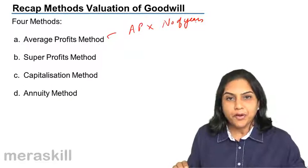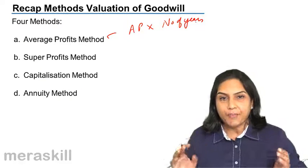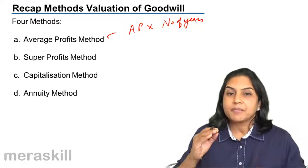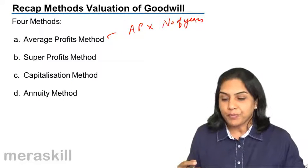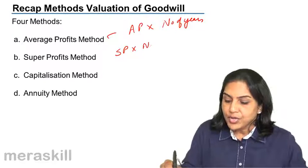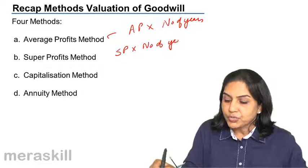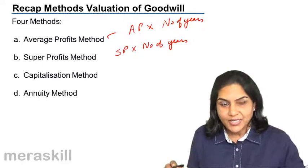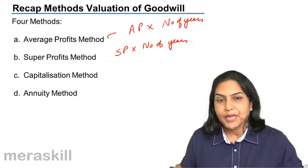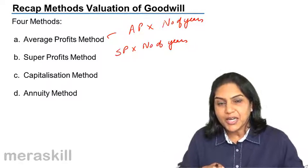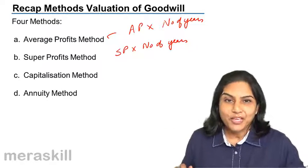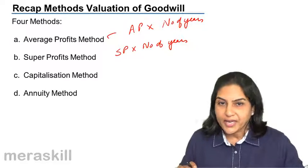Then we said super profits method. Every business is expected to make profit. Super profits method is the actual value of goodwill where a business makes extra profits, or super profits. So, instead of average profits, we took super profits multiplied by number of years. Super profits is the actual profit made minus the normal profit which should have been made. Normal profit is the normal rate of return multiplied by the capital which the partnership firm has employed in its business.